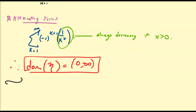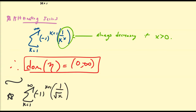For notation purposes, for example, the sum from k equals 1 to infinity of negative 1 to the k plus 1 times 1 divided by the square root of k — since 1/2 is greater than 0, this converges — and we denote this by eta evaluated at 1/2.